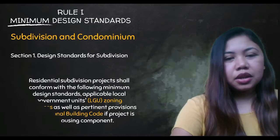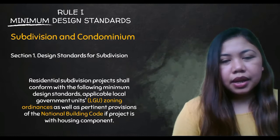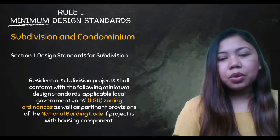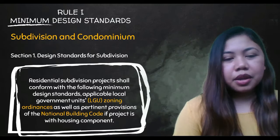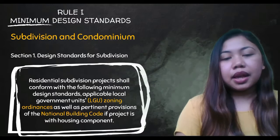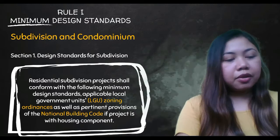Section 1: Design Standards for Subdivision. A residential subdivision project shall conform with the following minimum design standards: applicable local government unit zoning ordinances, as well as pertinent provisions of the National Building Code if the project has a housing component. Each place has different zoning ordinances.